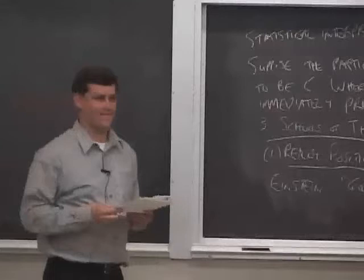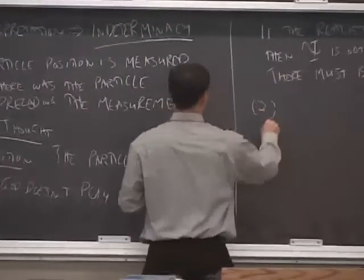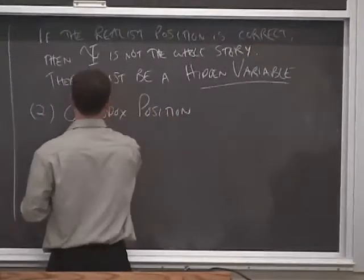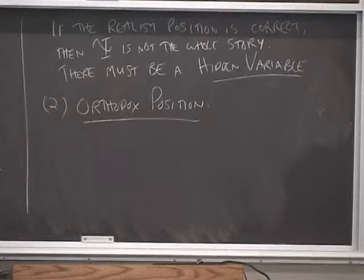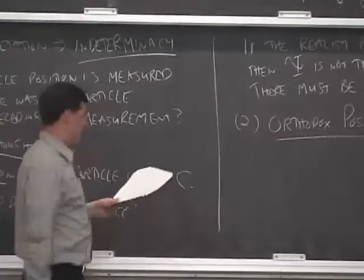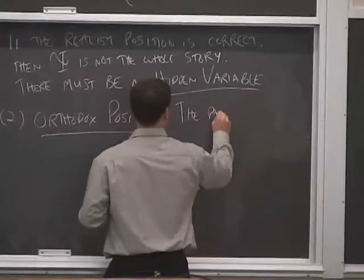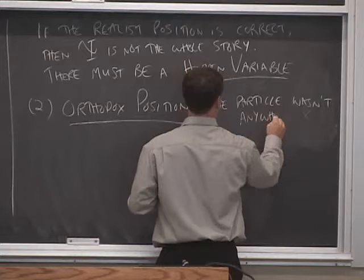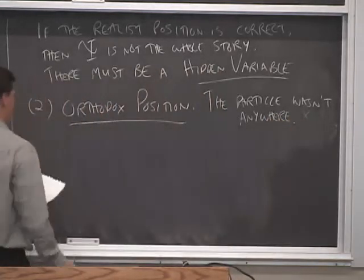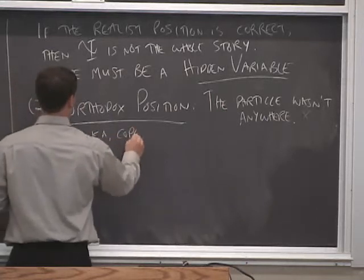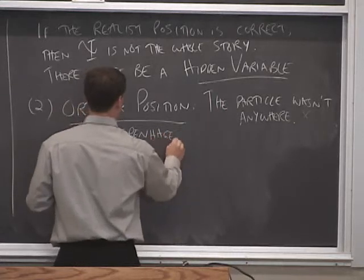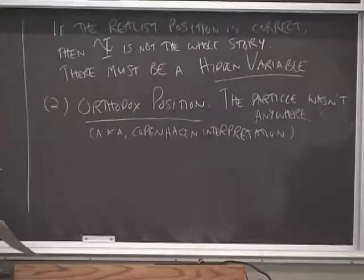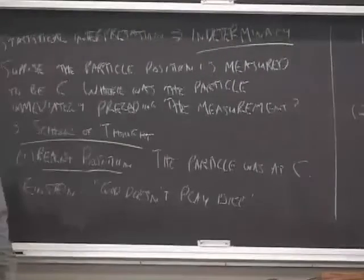The second position is known as the orthodox position. So the orthodox position, remember what question we're answering. Where was the particle immediately preceding the measurement? The orthodox position would say, the particle wasn't anywhere. This position is also known as the Copenhagen interpretation. The way to think about this position is that the measurement itself induces the particle to take a stand, to assume a position. So the measurement forces the particle to take a stand.